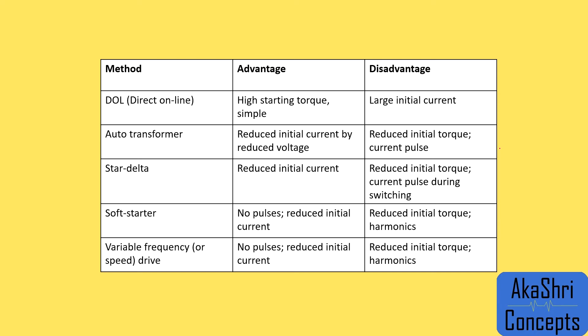The third and very common type of drive is the Star-Delta. In a star connection the voltage available is lower than in a delta connection. So at startup we have low voltage and lower initial current — that is the advantage of the star connection. When switching from star to delta, the voltage matches the phase voltage of the delta connection. The disadvantage of star-delta is the same as for the auto transformer: reduced initial torque, and because of the star-to-delta switching there would be a current pulse.